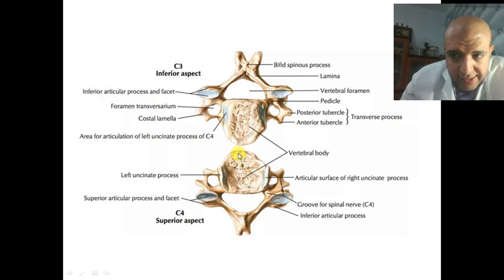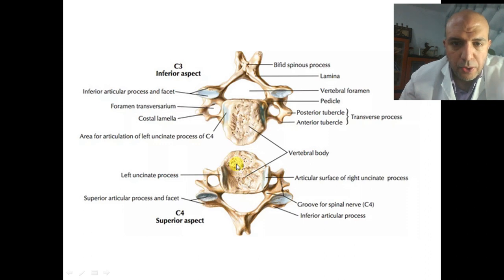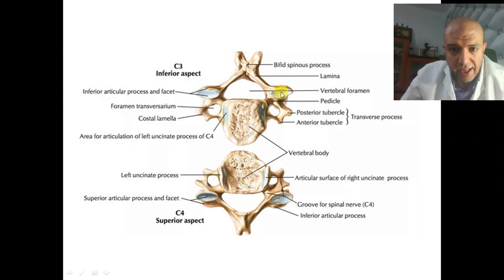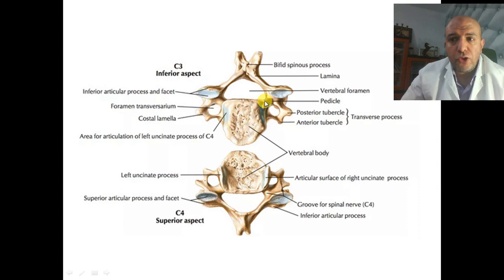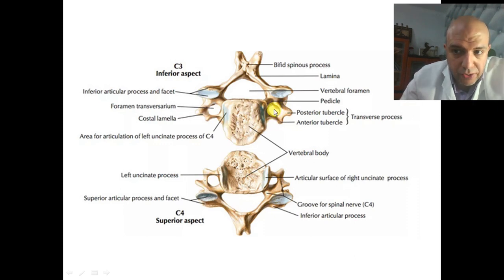The anterior part of the body is covered by the anterior longitudinal ligament. Posteriorly is the posterior longitudinal ligament. The pedicle connects the posterior part of the body with the posterior element. The foramen transversarium is inside the transverse process to transmit the vertebral artery and vein — except at C7.